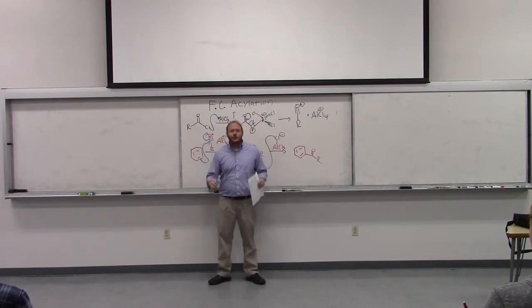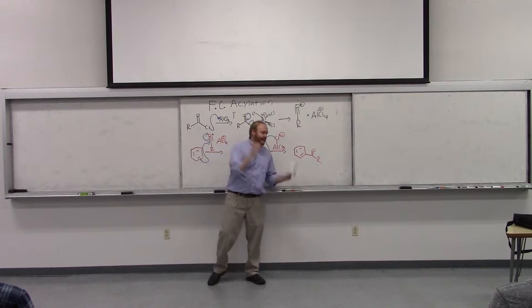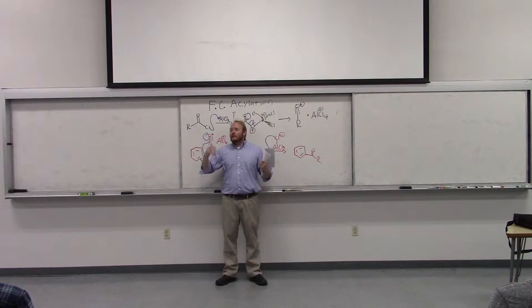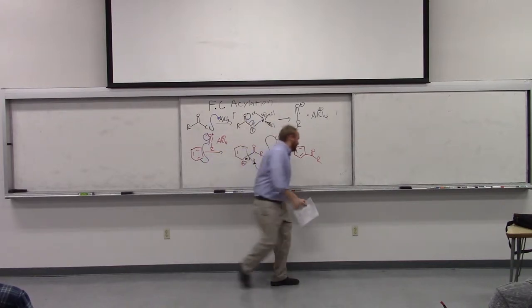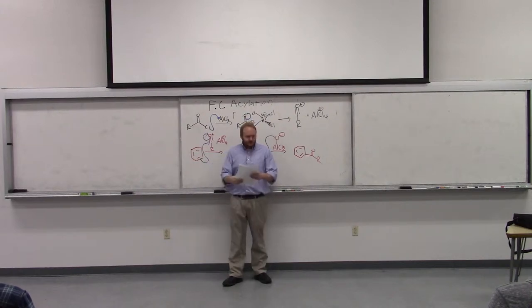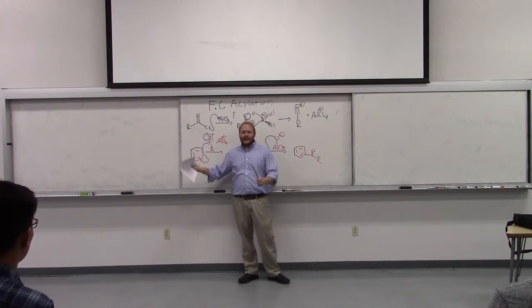That is a major drawback to Friedel-Crafts alkylation, in that if you want to make something — and I discussed an example at the end of lecture — that would come from a less stable cation, and it can rearrange, we will get a different product. Remember with alkylation chemistry, you have to worry about cationic rearrangements.